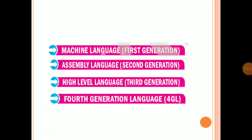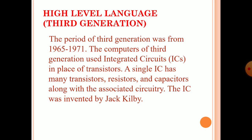Computer Language. Machine Language — 1st Generation. Assembly Language — 2nd Generation. High Level Language — 3rd Generation. 4th Generation Language.